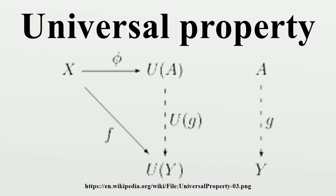Formal definition. Suppose that U: D→C is a functor from a category D to a category C, and let X be an object of C. Consider the following dual notions.